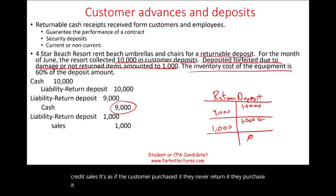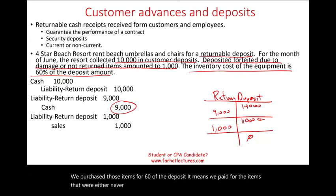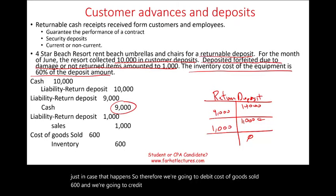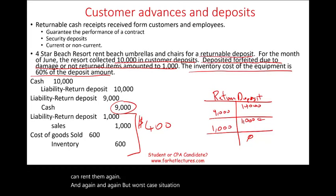The inventory cost of the equipment is 60% of the deposit, meaning we paid $600 for those items. So we debit cost of goods sold $600 and credit inventory $600. Before the damaged items, we made a $400 profit on those sales. Ideally, we want items returned so we can rent them again — we're in the rental business, not the selling business — but worst case, we make a $400 profit.